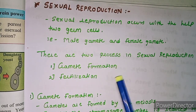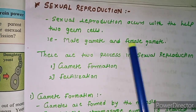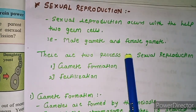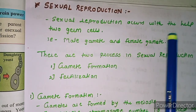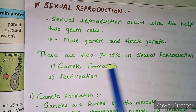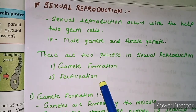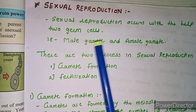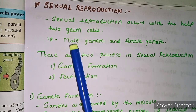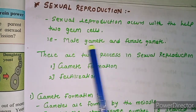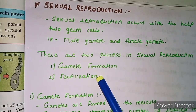Gamete formation means the male and female gametes first form in the human body or animal body. This formation of male and female gametes is called gamete formation. Fertilization means the union of male and female gametes — when they unite and a zygote forms, that is called fertilization.